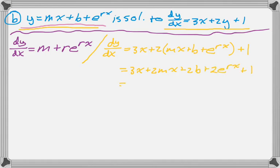So the next thing I'm going to do is factor this. So the coefficient of x is 3 plus 2m. The constant term is 2b plus 1. And then I have 2e to the rx. And now what I'm going to do is compare the two things and just equate the coefficients.